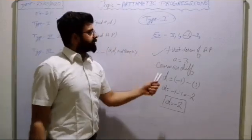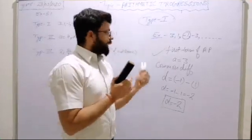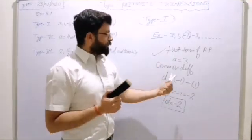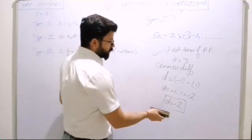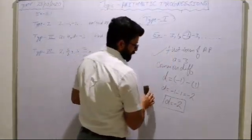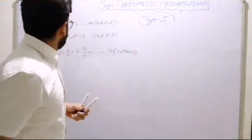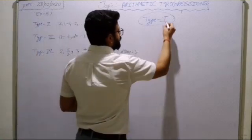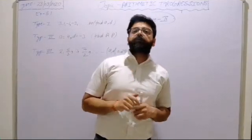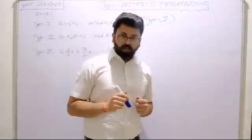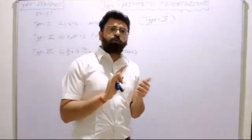So this is the first type of question: you get a direct AP and then you have to find the first term and the common difference. Now, Type 2: in this type, you will be given 'a' (the first term) and 'd' (the common difference), and then you have to find the AP — at least three or four terms we will take out and write.